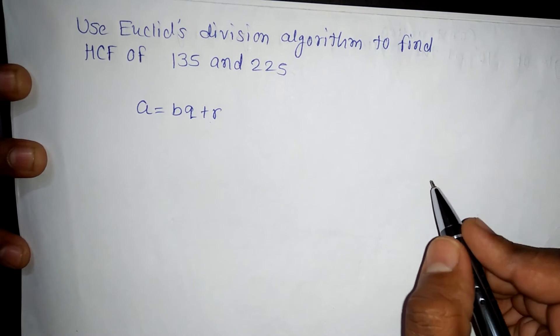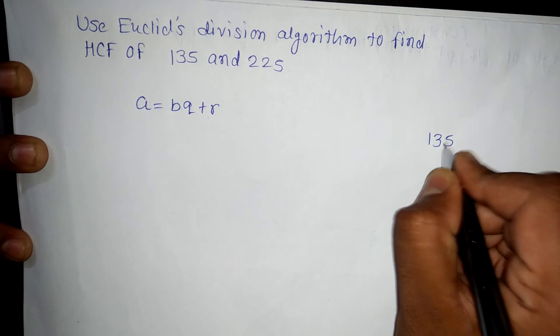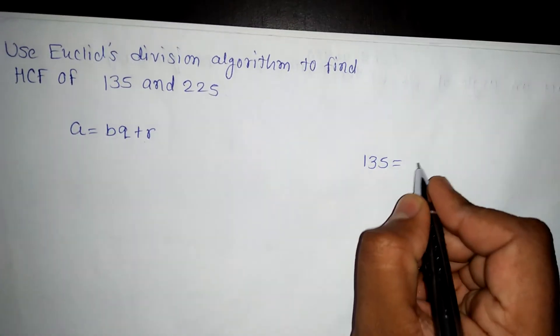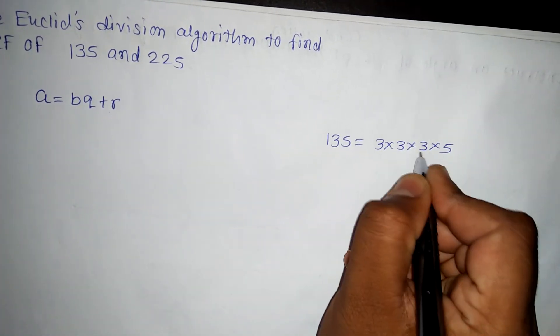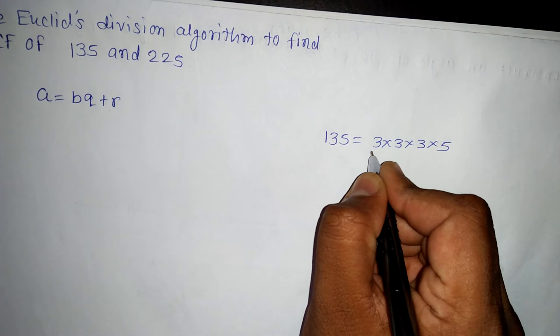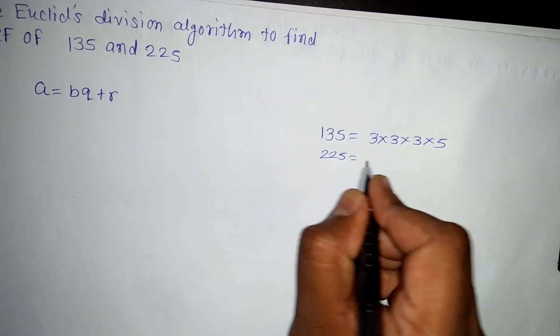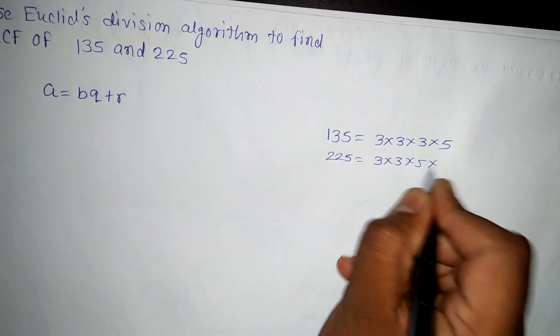Now let us see how to find it out by the simple method. Then we know how to find it out. 135 is equal to, we know the factors of 135, that is 3 into 3 into 3 into 5. 5 times 3 is 15, times 3 is 45, times 3 is 135. And 225, we should write the factors, that is 3 into 3 into 5 into 5.